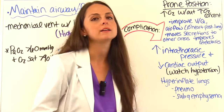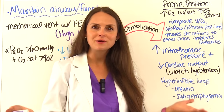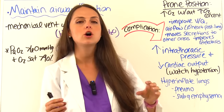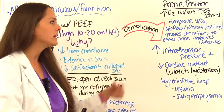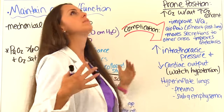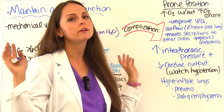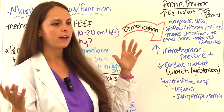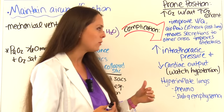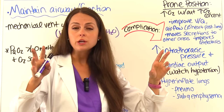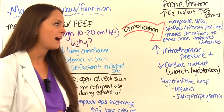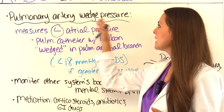Prone positioning — flipping the patient from their back to their belly — can improve respiratory function. Though unusual in nursing, prone positioning has been shown to increase oxygen levels without raising oxygen concentration. It improves ventilation-perfusion matching and airflow because the heart no longer compresses the posterior lung regions. When flipped, the heart rests against the sternum instead, secretions can move to areas previously blocked in the supine position, and atelectasis can improve.